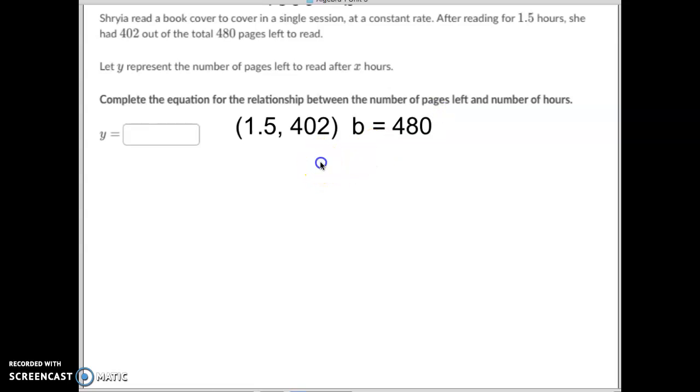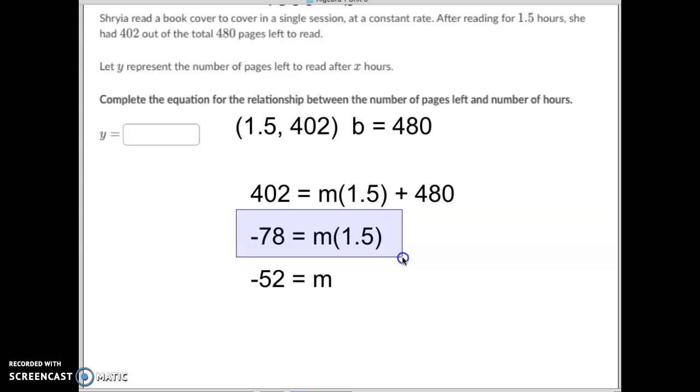So we're going to plug that information into our y equals mx plus b. And we know that 402 is our y. We do not know our m yet. We do know that x was 1.5 and we know the b was 480. So we will first subtract the 480 from both sides. When we subtract 480 from 402, we're left with negative 78 equals m times 1.5. We then divide both sides by 1.5 and we find out that m equals negative 52.